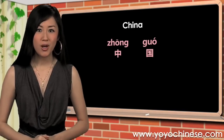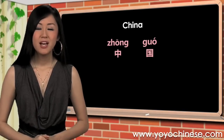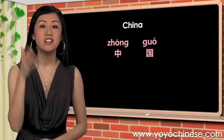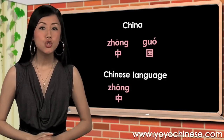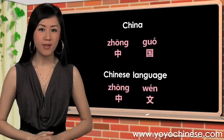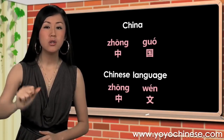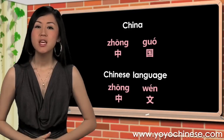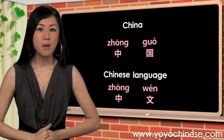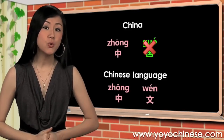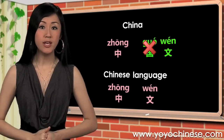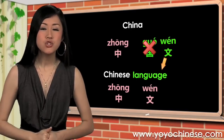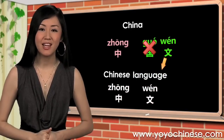Do you remember how to say China? That's 中国 (Zhōngguó). Here's how you say 'the Chinese language': 中文 (Zhōngwén). You simply drop 国 (guó), meaning 'country,' from 中国, and add 文 (wén), which means 'language,' and then you get 中文 — the Chinese language.